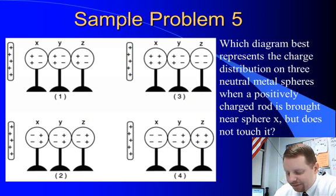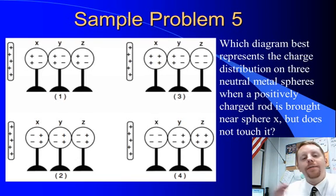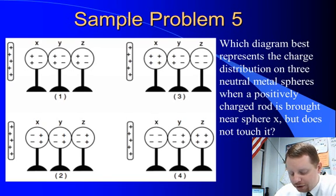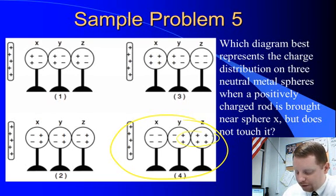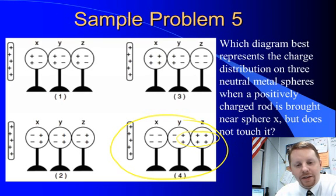One last sample problem: which diagram represents the charge distribution on three neutral metal spheres when a positively charged rod is brought near sphere X but does not touch it? Since we have metal spheres that are touching, charge can move between them. The positive charge on the left means the free electrons in those metal spheres will move toward it, giving us the distribution in answer four — leaving a net positive charge furthest away from the spheres, even though the net charge on the metal spheres overall is still neutral.